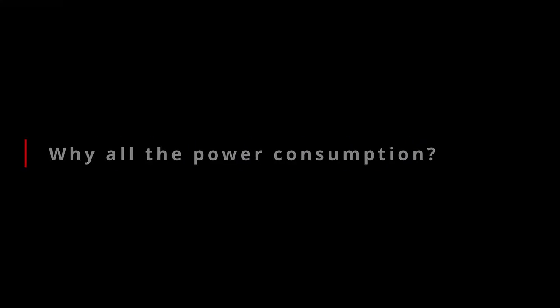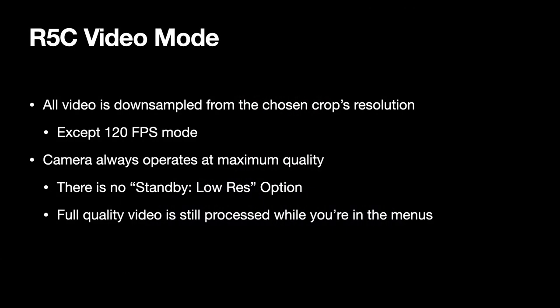In video mode, the camera draws considerably more power as there's considerably more load on the system than there is for either the R5 when shooting video or the R5C in photo mode. Ultimately, this is due to the Cinema EOS operating system and the design decisions made to support a professional video or cinematography application.